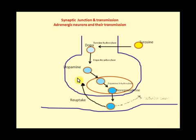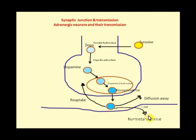Termination of adrenergic action differs from cholinergic. Number one is reuptake. Number two is diffusion away. Number three is conversion via the enzyme catechol-O-methyltransferase (COMT) to normetanephrine. These are the three mechanisms for termination of norepinephrine action.